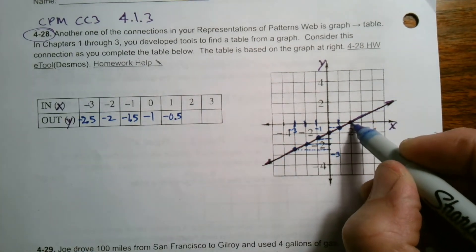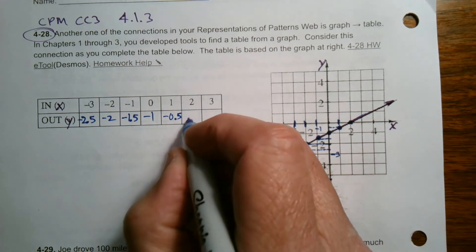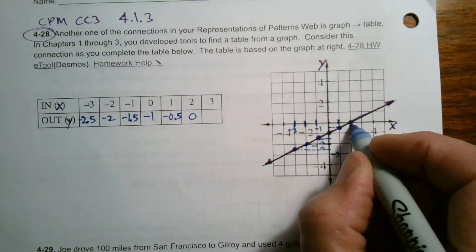At two, where am I at? At X equals two, Y is at zero, right? It doesn't go up or down. It's at zero.